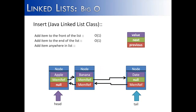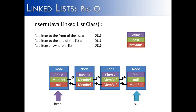It's a little different if I want to add an item anywhere in the list. Let's say I want to add a node between the banana and date nodes. Inserting the item itself takes constant time, just like inserting at the front or the end. But what takes more time — and depends on where you want to put it — is the search. I have to search for the place to put it, and because I don't know where that spot is going to be, it's going to take a Big O of N.